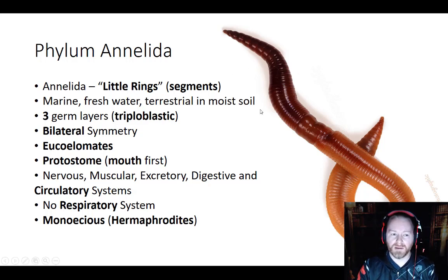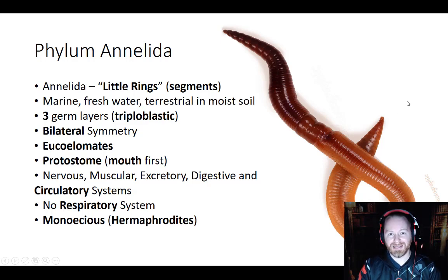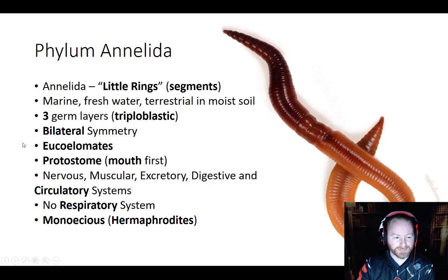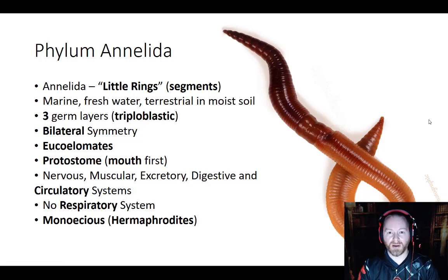Annelids do follow some cephalization — they have some specialized regions in the head and some specialized reproductive regions in the middle — but a majority of their body is just repeating segments that are fairly identical to each other. We definitely see that trait throughout all of the classes within this phylum.